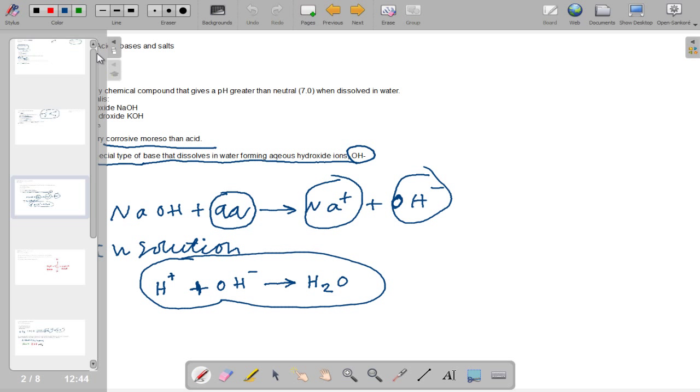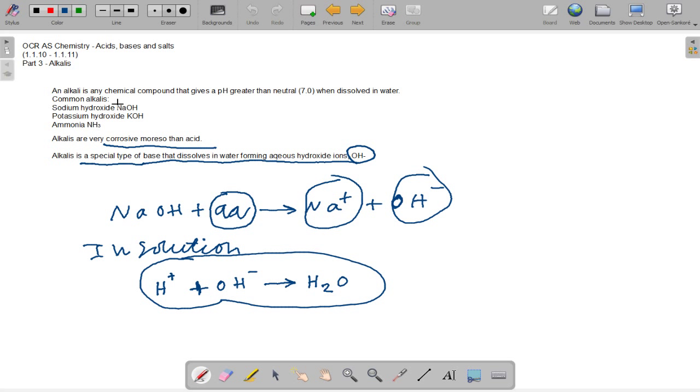Alkalies are any chemical compound that have a pH greater than neutral 7.0 when dissolved in water. The common alkalies are sodium hydroxide, potassium hydroxide and ammonia. Alkalies are very corrosive and even more so than acid. When you put an alkali into water, you get OH minus ions, which is the active ingredient in all alkalies, and a metal ion. In solution, water can also be made: H plus plus OH minus equals H2O. That's why acids and alkalies can neutralize each other.